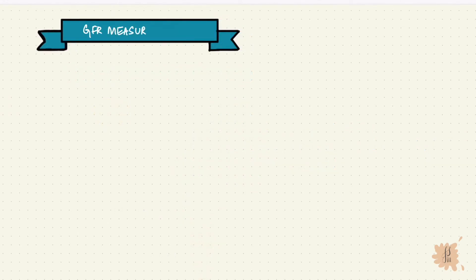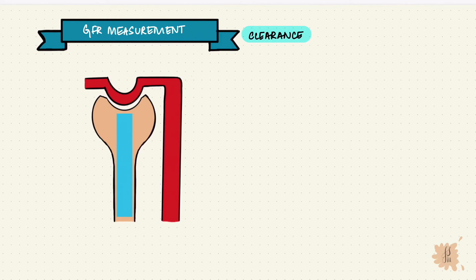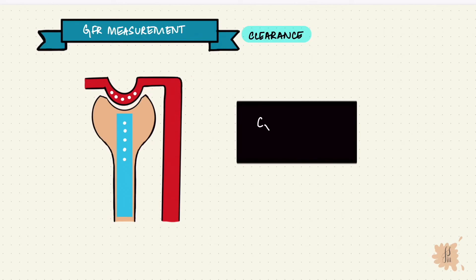The GFR can be measured by measuring clearance. You can check out my video on clearance linked in the description box below. Clearance is the rate at which a substance is cleared from the plasma per unit time. It's given by the urine concentration of a substance times the urine flow rate over the plasma concentration of that substance.